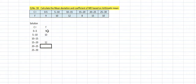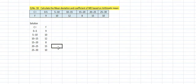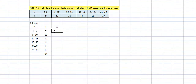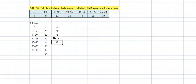The frequencies given are 9, 10, 12, 8, 15, and 10 — total is 64. Now find the midpoint M for each class: 0+5 divided by 2 is 2.5, then 7.5, and since the class width is 5, you keep adding 5: 12.5, 17.5, 22.5, 27.5. Then multiply F into M.